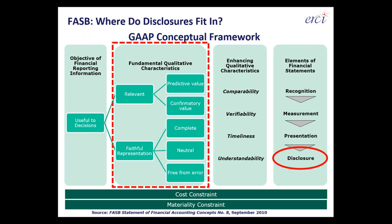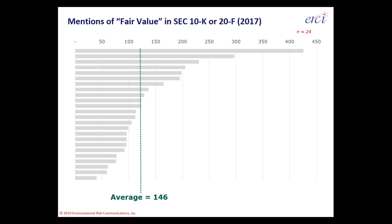Fair value measurement means looking at an expected value — a weighted average of multiple outcomes — and a present value, which means discounting to today's dollars even though cash flows may take years. Fair value is the core driver these days for looking at a balance sheet for disclosure purposes. If you pull up an average 10-K report, you'll find something on the order of 100 to 200 citations of the term 'fair value' in an annual report to investors.